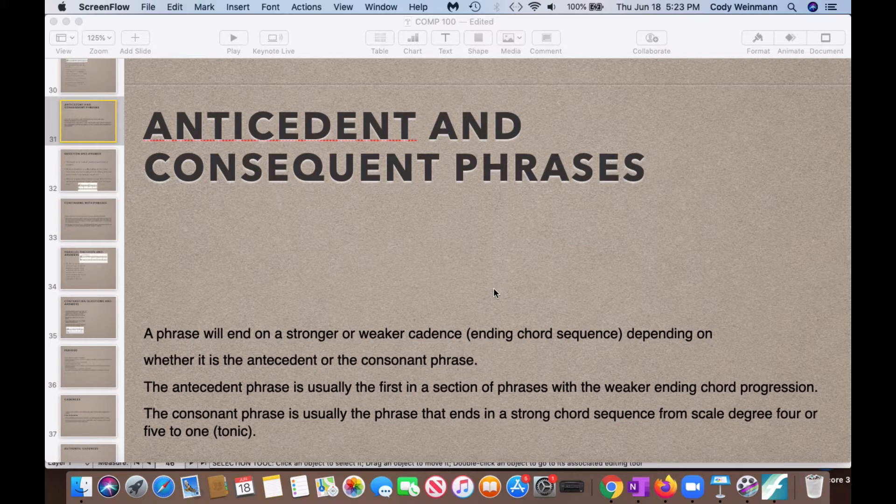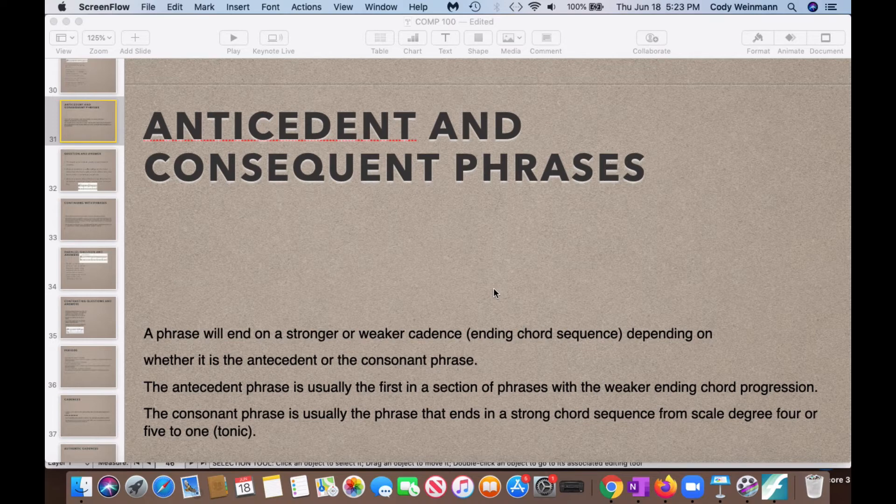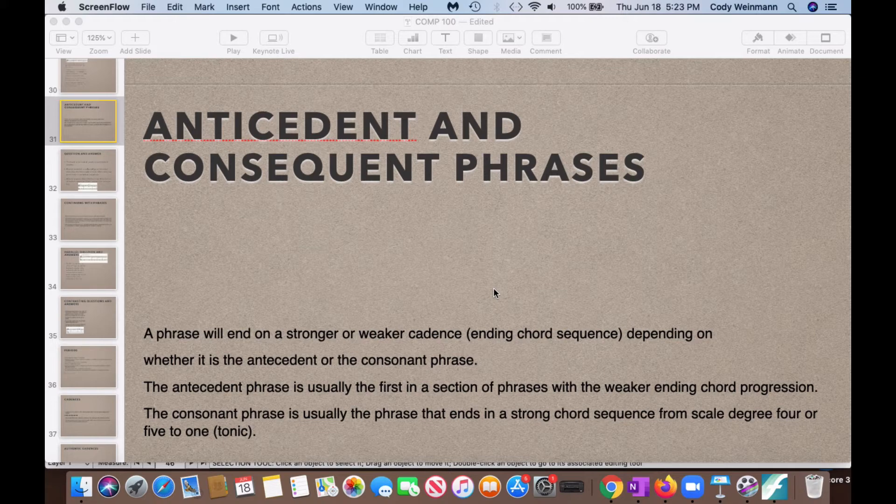And one and tonic are always the same, and they're always the strongest that you can end on. And one and five actually are the strongest progressions that you can land on. So the consequent phrase would be this. And then, antecedent one. Okay, that was our weak one.